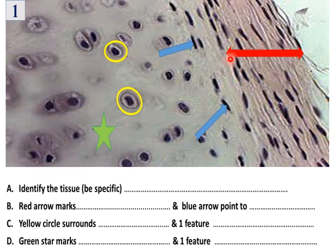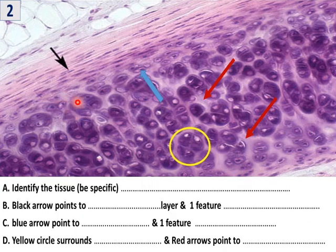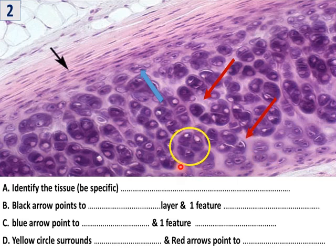The red arrow indicates the outer fibrous layer of the perichondrium, the blue arrow the inner chondrogenic layer or chondroblasts, and this is the chondrocyte and matrix. Another example of hyaline cartilage: the cell nest is formed of four cells and the fibers cannot be seen. Even if the matrix appears little, it is still hyaline because the fibers are invisible and the cell nest is formed of four cells — you can see many cell nests of four cells.